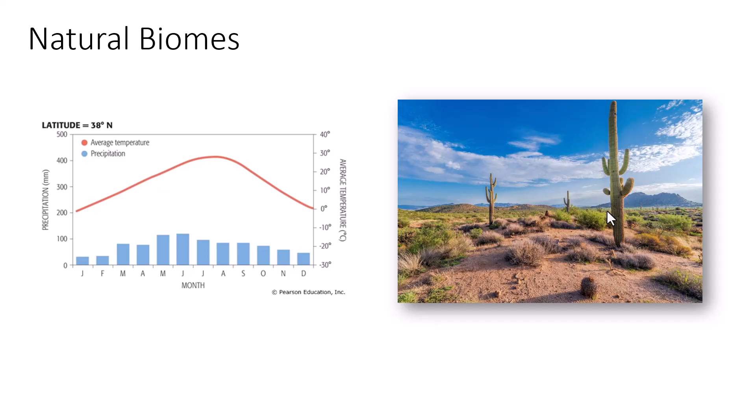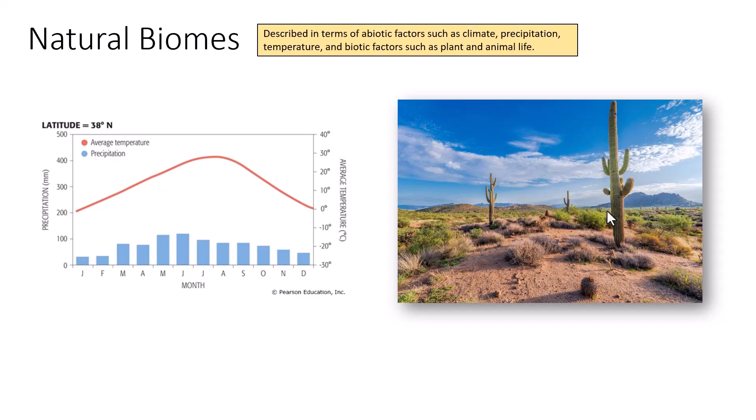The first thing we need to talk about when we begin our discussion of biomes is what a biome is. Biomes are described in terms of their abiotic and biotic factors. Biotic factors are those things that are alive — plant and animal life. Each biome has a specific set of plants and animals well adapted to that area, and those adaptations depend on abiotic factors such as weather, climate, precipitation, pH, and temperature.